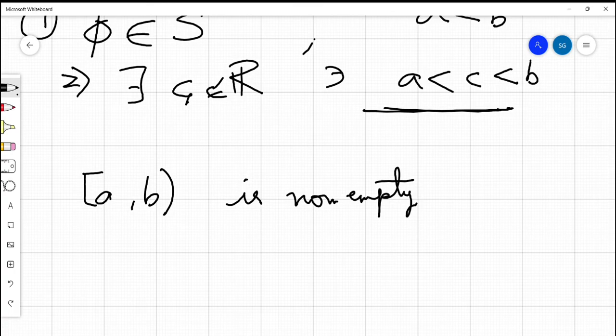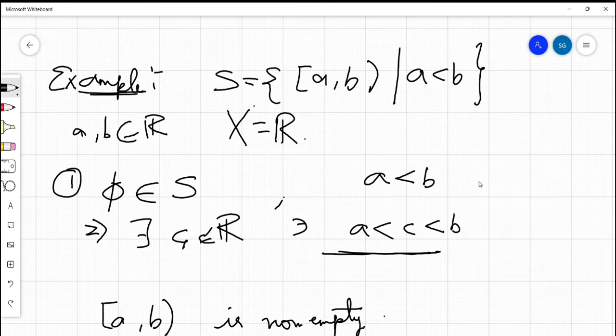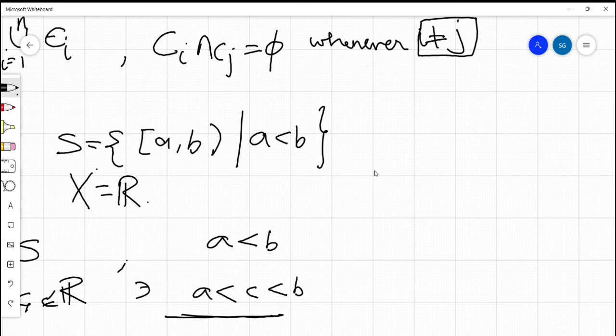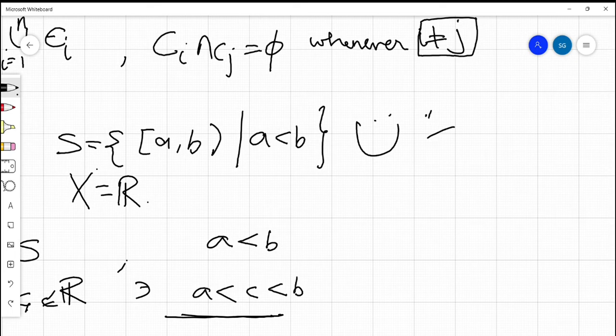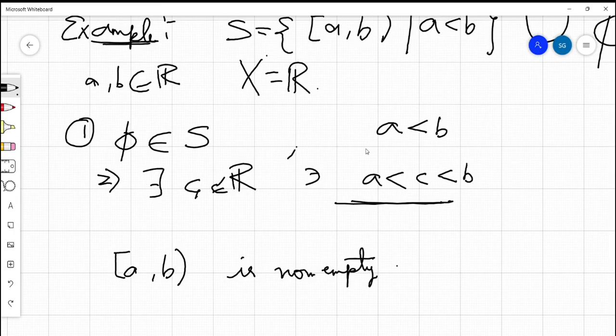For any real numbers a and b, the interval [a, b) is non-empty, but we require that the empty set belongs to S for S to be a semi-ring. Therefore, what we can simply do is include phi in this set. When we include the empty set as an element of S, by definition phi belongs to S.